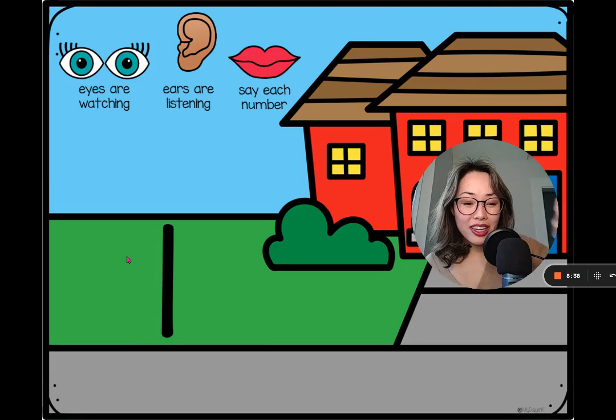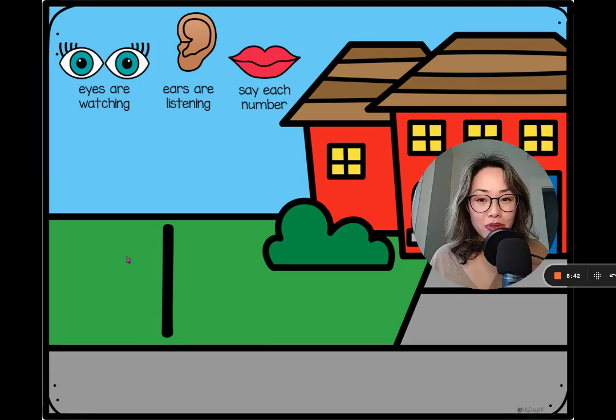Number one looks like just a straight line. And then I might remind students, remember number one is a number. It's not the letter L. It's not the letter I. It's the number one. Letters and numbers are different things.